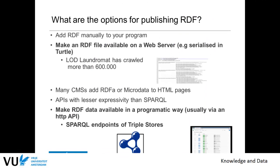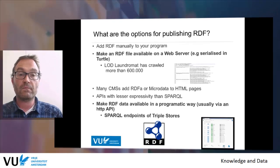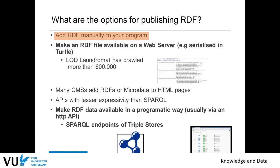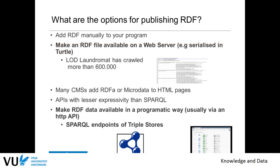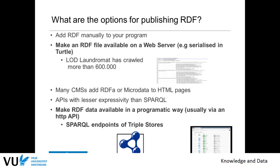If you want to publish data, you can, in your program like you did last week, add RDF manually — you write down add SPO to your graph and then work with this. An alternative is that you load an RDF file from your own file system into your program, where it's parsed and serialized. You can do the same with files downloaded from a web server. We have a program at the VU that one of our PhD students developed called the LOD Laundromat, and it has crawled more than 600,000 different documents of this kind — really RDF files in Turtle or similar formats. Many content management systems also add small snippets of RDF, usually called RDF-A or micro data, to the HTML pages they produce. There are also some other APIs with less expressivity than SPARQL, but we will ignore them for now.